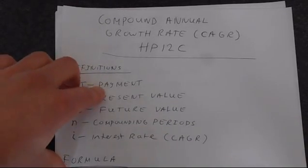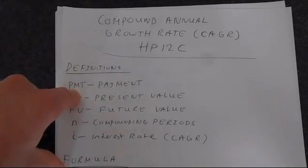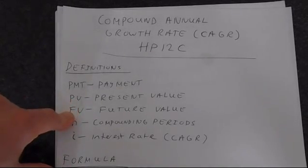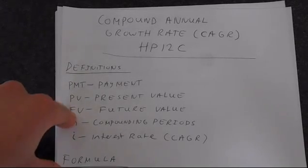PMT stands for payment. If you were getting dividends, you would use this function. Present value is how much you're investing or borrowing now. Future value is what this is going to be worth or cost you in the future.